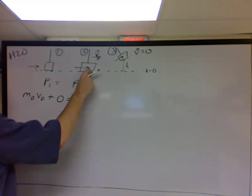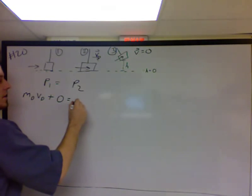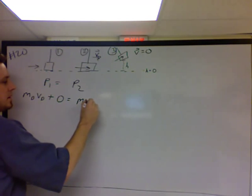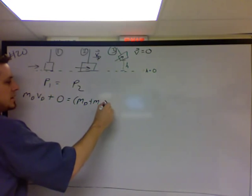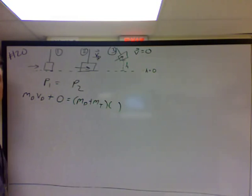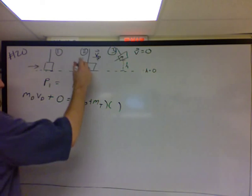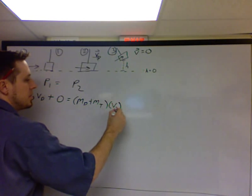Equals here, they're stuck together. So mass of the dart plus mass of the target times the velocity in the after picture. Since they're stuck together, I'm going to go ahead and just call this V2.